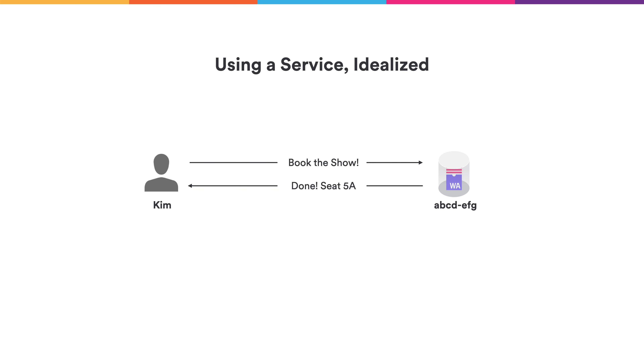Let's start with how it would look in an idealized world. Imagine you're interacting with a service running completely in a trusted environment — say your own computer or your company's network. The service we're looking at is a booking agency for show tickets. You ask it to book a ticket and it responds: you got a ticket for that show and your seat is 5A. As long as all the moving parts — the service, the network — are trusted, that's all you need. You know you've really booked a ticket to seat 5A.